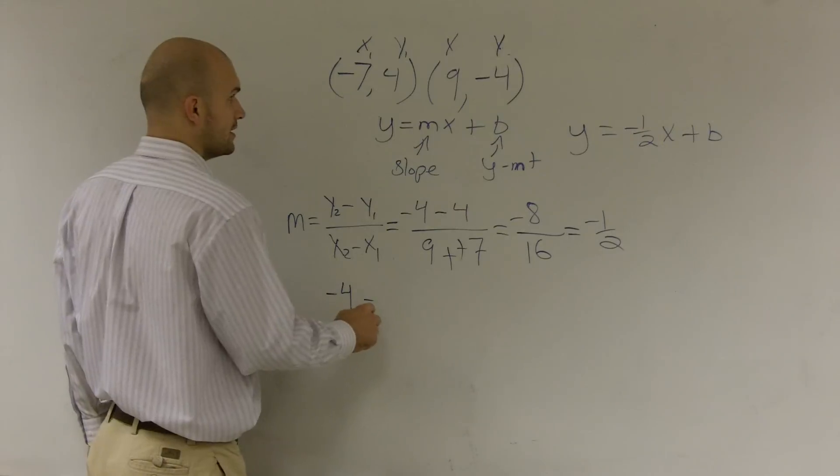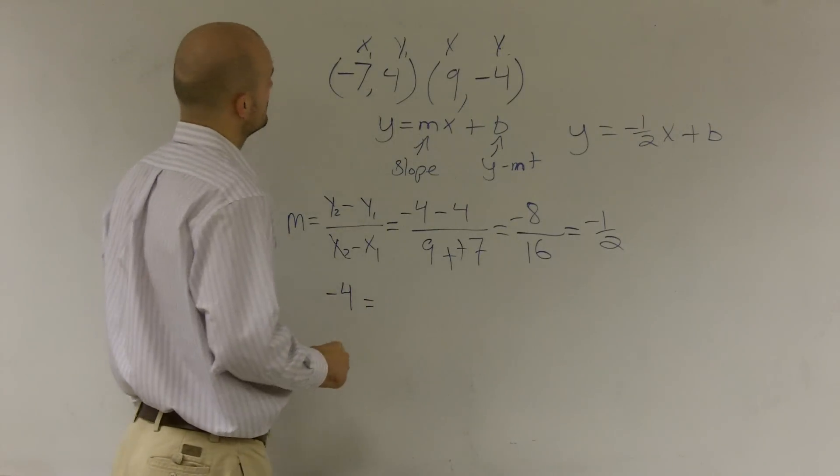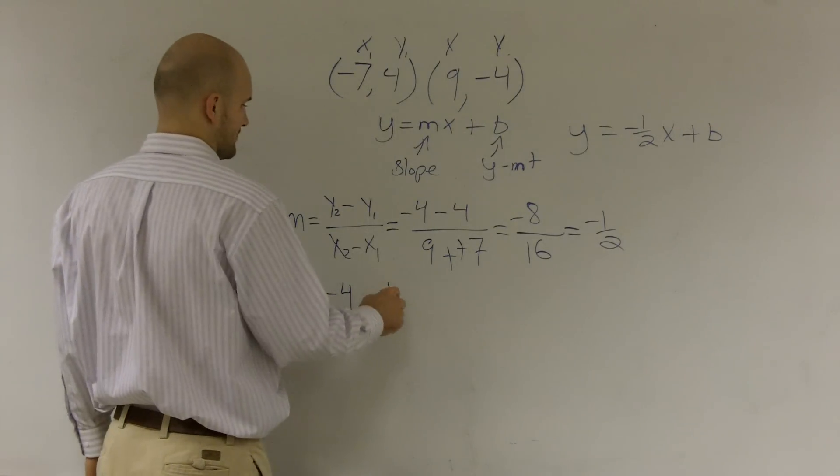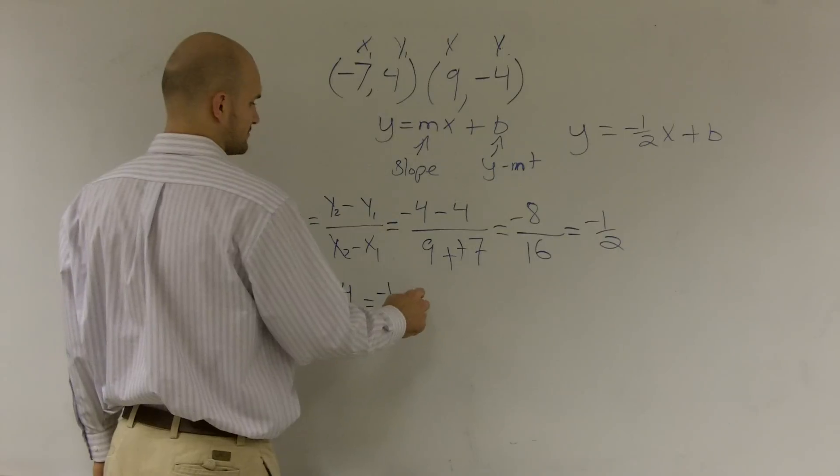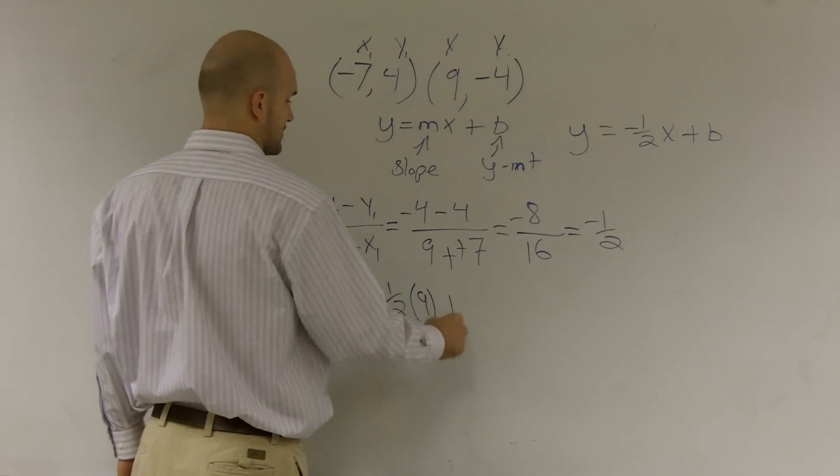This is negative 4 equals negative 1 half times 9 plus b.